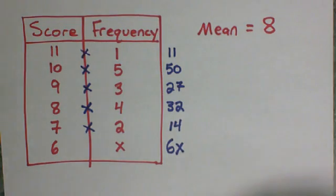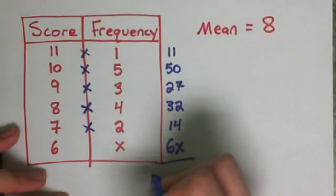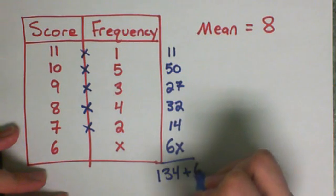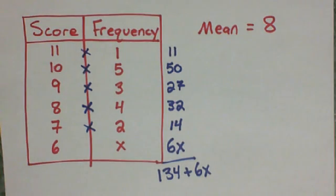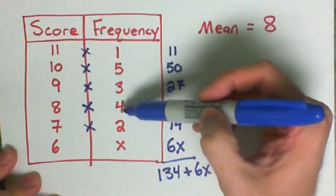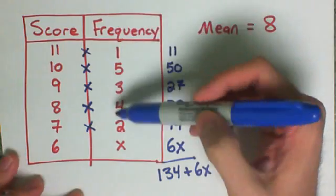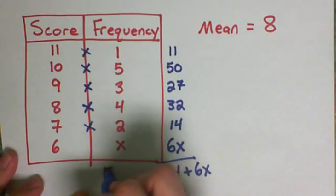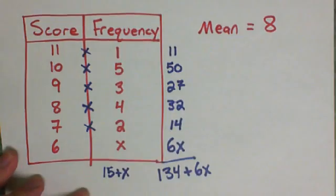So if I add this all up, this gets me 134 plus 6x. Now I want to add up how many numbers there were. There are 1 plus 5 plus 3 plus 4 plus 2 plus x. If I add that all up, I get 15 plus x.